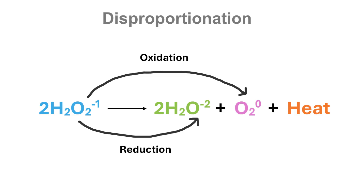The oxygen of hydrogen peroxide is in a minus one oxidation state. It undergoes oxidation and loses an electron to form oxygen molecules, where the oxidation state of oxygen is zero. Simultaneously, another molecule of hydrogen peroxide undergoes a reduction reaction by gaining an electron to form a water molecule, in which the oxidation state of oxygen is minus two. The steam produced in the reaction is water, which is heated up by the heat produced in the same reaction to form water vapor or steam.